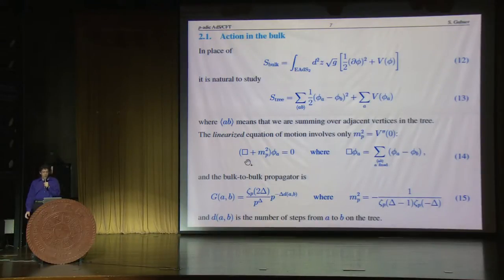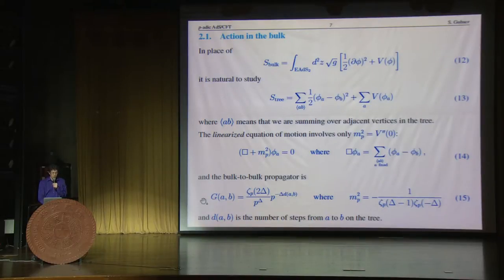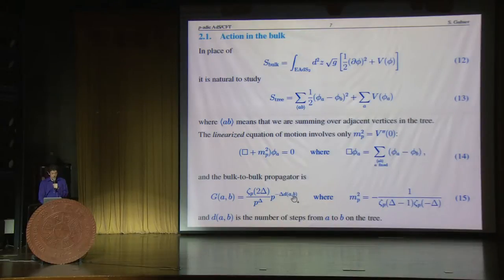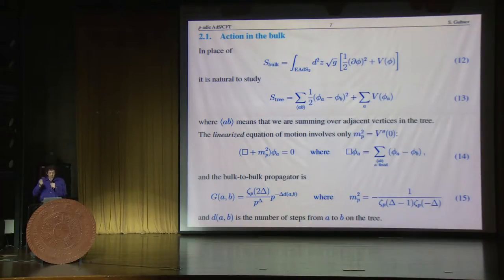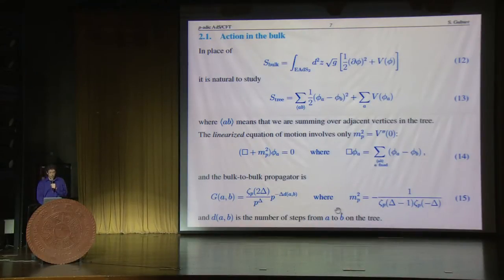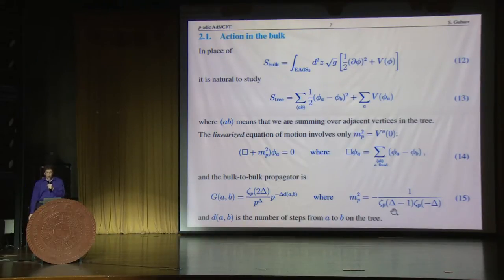Step one is to find solutions to the linearized equation of motion for this scalar phi, and in particular to find a bulk-to-bulk propagator, which takes a specific form involving zeta sub p. D of A and B is the distance on the tree — meaning how many steps do you have to take to get from A to B — it's a well-defined number because the graph is a tree. And there's a relation between the mass, a real number, and the dimension, also a real number, which is quite reminiscent of the usual AdS-CFT relation between bulk masses and boundary dimensions.